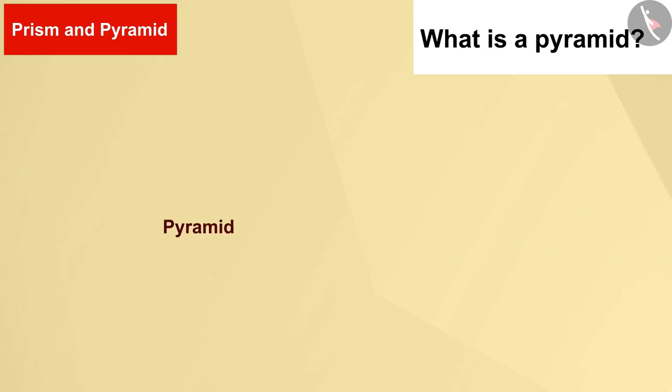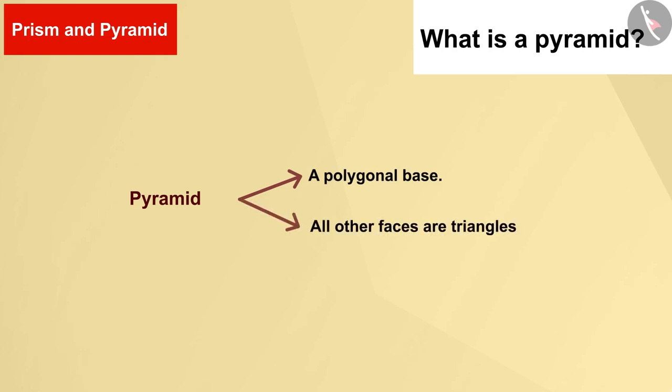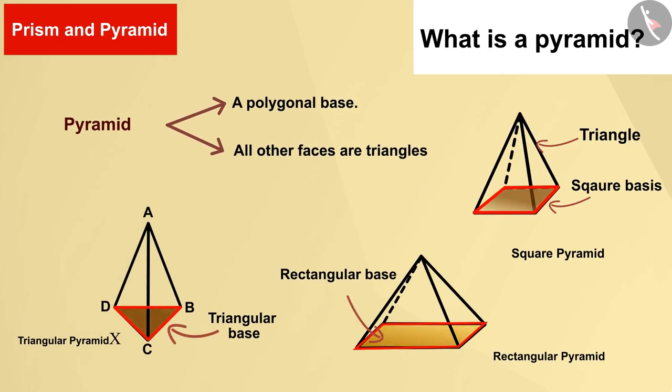So how can we define a pyramid now? The pyramid is a solid figure with a polygonal base, and all other faces are triangles. Pyramids are classified according to their base. Remember that all the faces in a pyramid are triangles except the base.